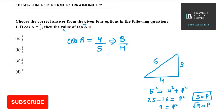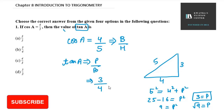Now, what is tan A? Tan A is P over B — perpendicular over base. Perpendicular is 3 and base is 4, so the value of tan A is 3 by 4. That's how you get tan A from cos A. If there are similar questions, you can proceed the same way.